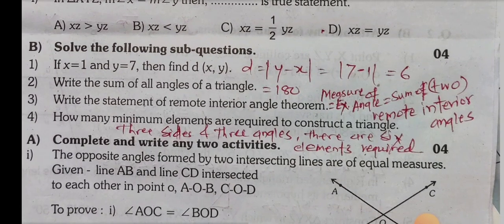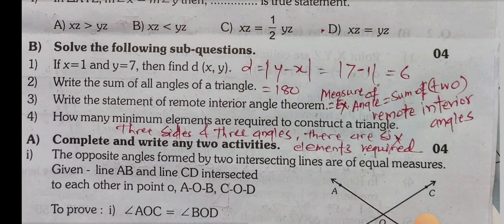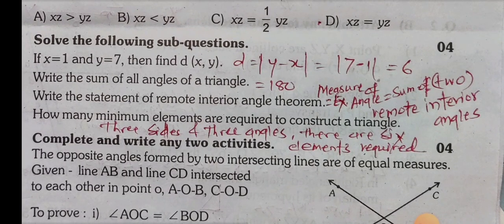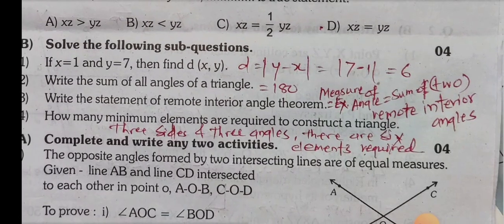Question 4: How many minimum elements are required to construct a triangle? There are six elements required to construct a triangle: three sides and three angles.